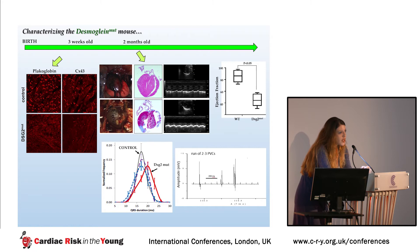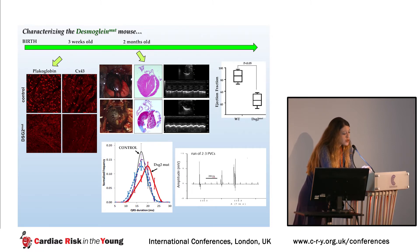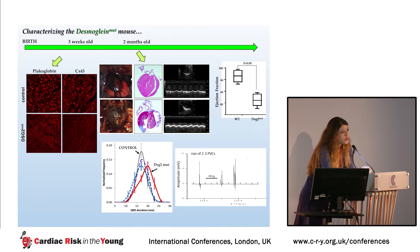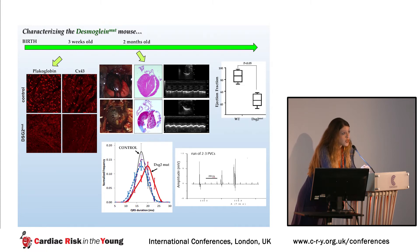The second mouse, the desmoglein-2 mouse, gets sick much earlier than the plakoglobin mouse. By two months of age, its heart is much bigger, showing a very thin right ventricular free wall with aneurysms and massive fibrotic replacement. Echocardiography shows a great drop in ejection fraction down to 45% as opposed to 85% in a normal mouse. It shows arrhythmias — PVCs and VT — a significant increase in QRS duration reflecting more ventricular ectopy, and again plakoglobin and connexin-43 are gone from the junctions.